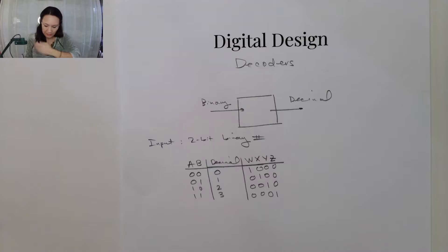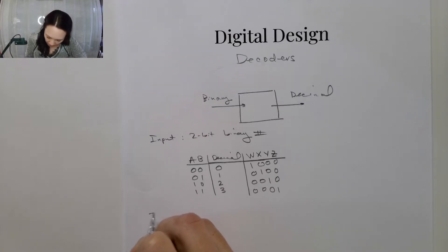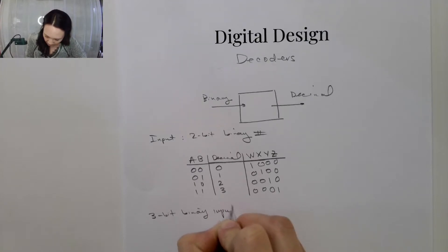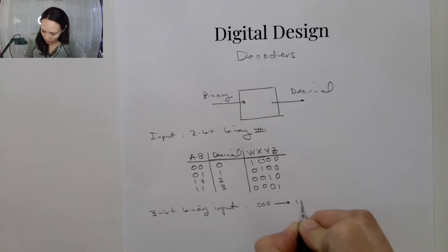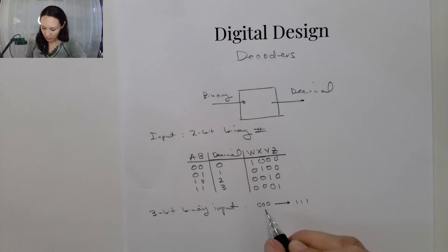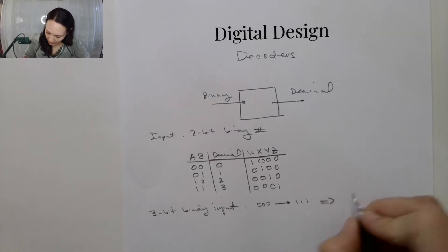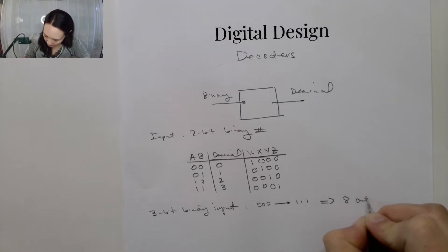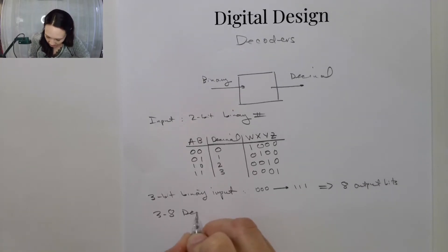Let me show you another example: if we have a 3-bit binary number, the largest number we can count up to is 7 — from 000 up to 111. So that means we have to be able to count between 0 and 7, and we're going to need 8 different output bits. This is going to be a 3-to-8 decoder.